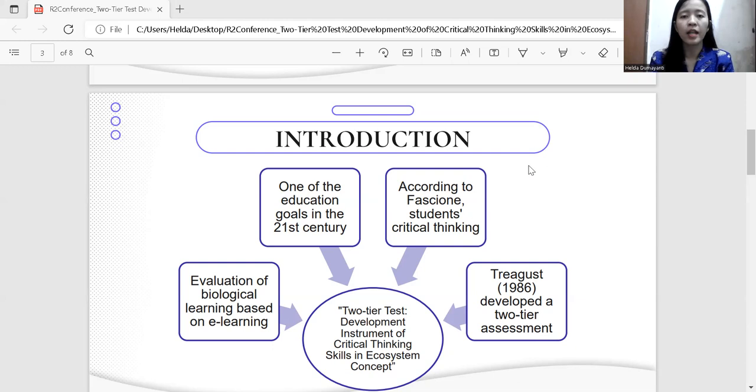Treagust developed a two-tiered assessment in which the first level and second level multiple choice questions become the reasoning for the first level question. Based on this statement, it is necessary to conduct research on two-tiered assessment of critical thinking skills in ecosystem concept.